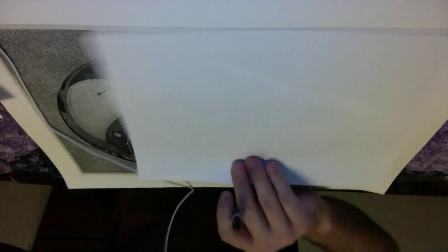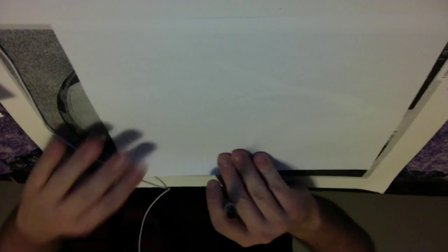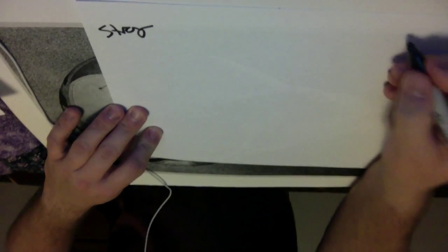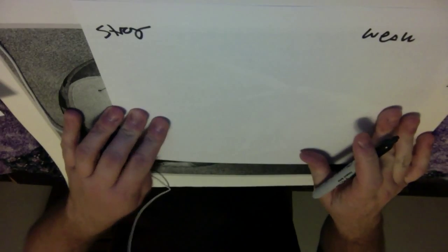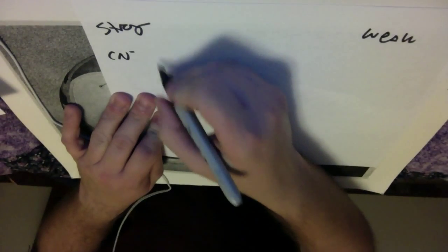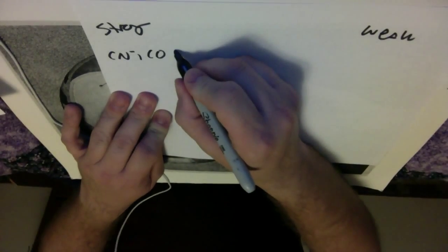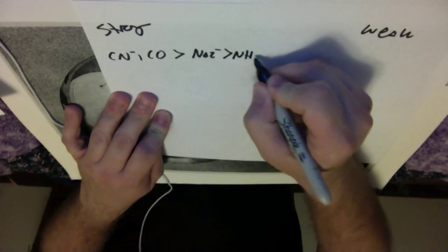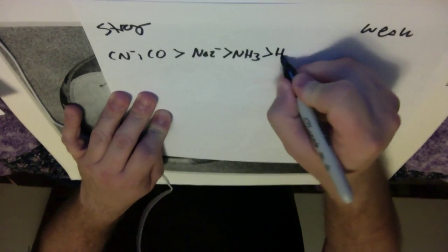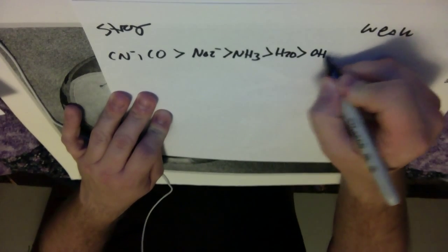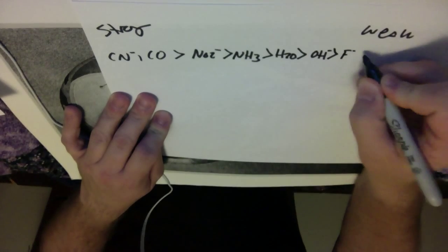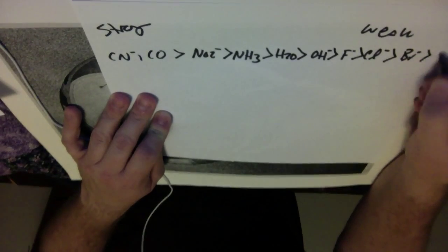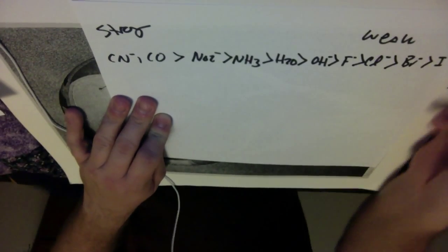So if you remember when we talked about the spectral chemical series, I said I had strong ligands here and weak ligands over here. And I said that the cyanide ion, carbon monoxide, would be greater than NO2 negative, greater than ammonia, H2O, hydroxide, fluorine, chlorine, bromine, and iodine.